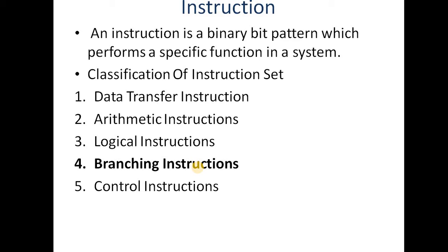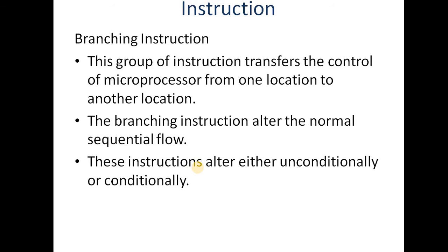Yahaan Part 6 mein hum aapko branching instructions ke baare mein bataayenge. Branching instruction kya hote hain? This group of instructions transfers the control of microprocessor from one location to another location. Branching instructions kya karte hain — jis tarah se humara program line by line execute ho raha hota hai, us control ko ek jagah se doosri jagah transfer kar deta hai. Ab line by line na karke, woh kisi aur location par jaa kar switch kare, aur wahaan ke instructions ko execute kare. Agar execution ko kahin aur switch ya jump karana ho, toh hum branching instructions ka use karte hain.